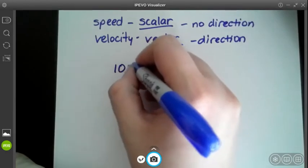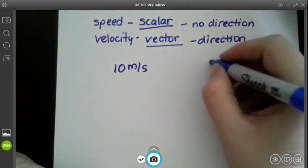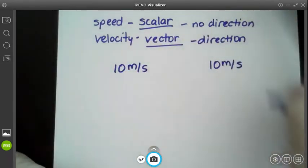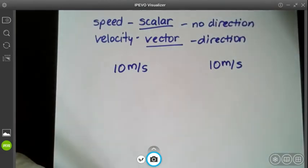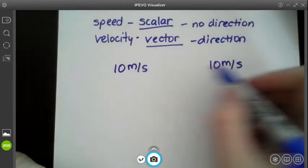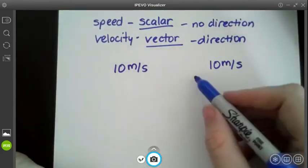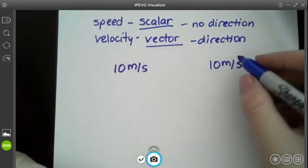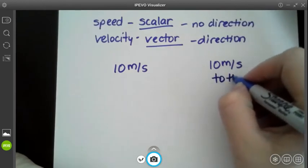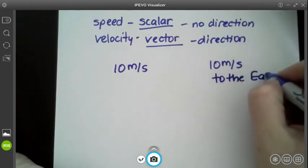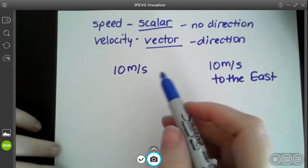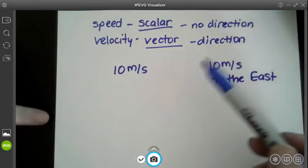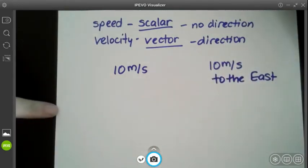So I have two examples. I'm going to write 10 meters per second and 10 meters per second. So meters per second is your units for both velocity and speed. But in order to distinguish between the two, velocity needs to have a direction with it. So 10 meters per second is speed, but if I say 10 meters per second to the east, I'm actually talking about velocity.